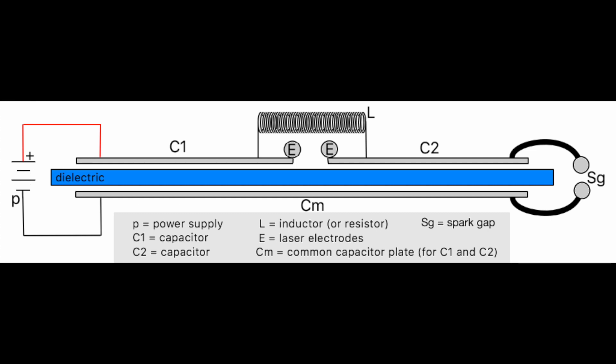The TEA nitrogen laser uses a high voltage DC power supply to charge an extremely thin insulator, called a dielectric, through metal films that have been placed on opposing sides. One side of the dielectric has a single metal film and the opposing side has two separate metal films separated by a narrow channel.